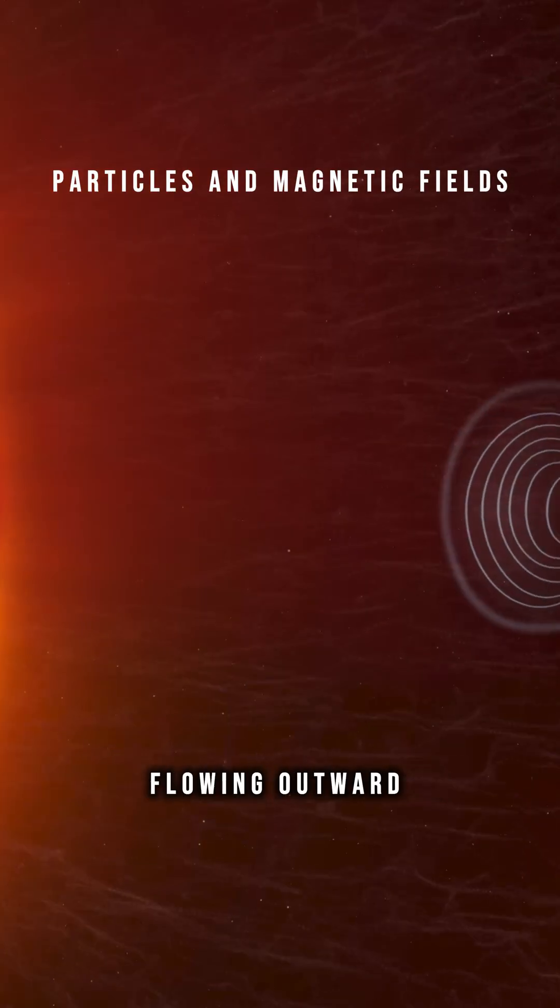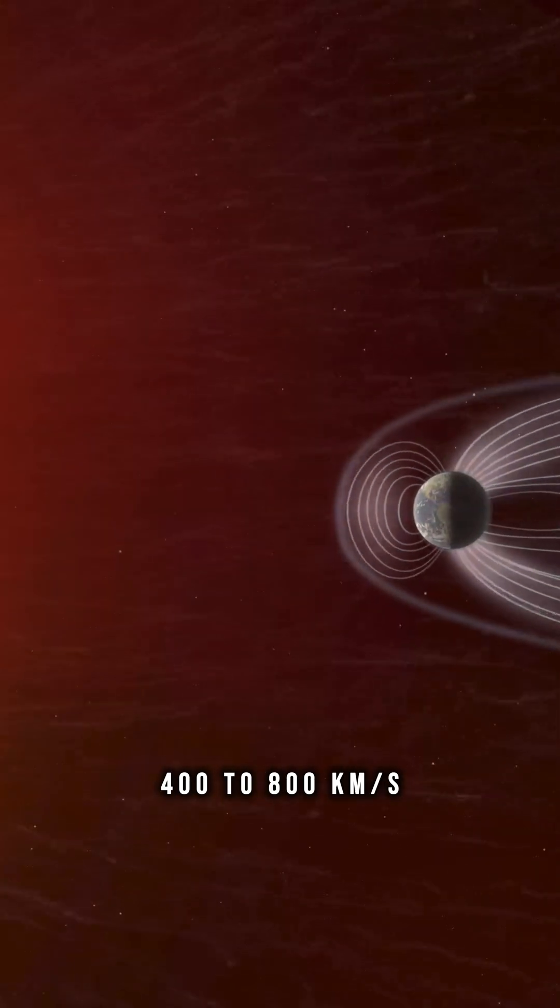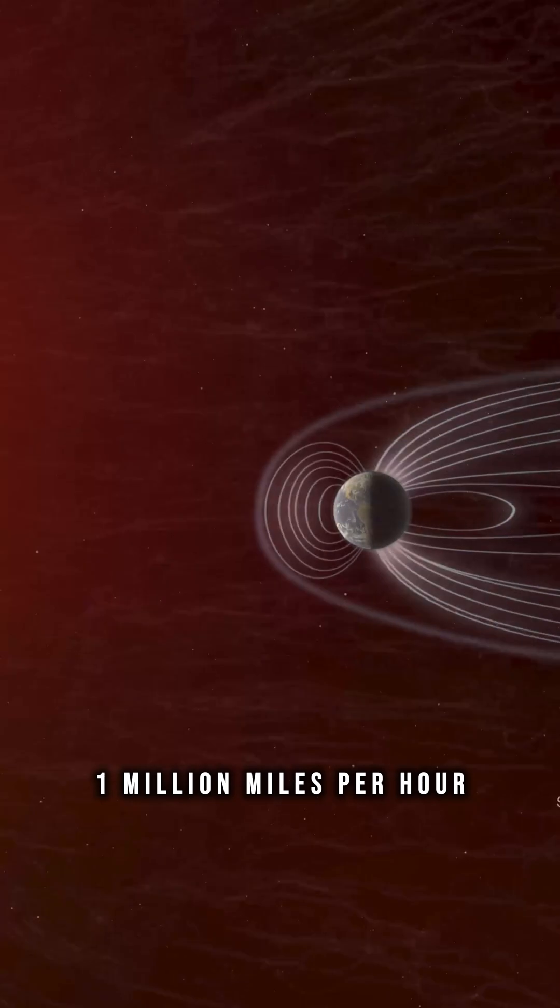That's a continuous stream of charged particles flowing outward from the sun. Typical speeds are 400 to 800 kilometers per second, which is well over a million miles per hour.